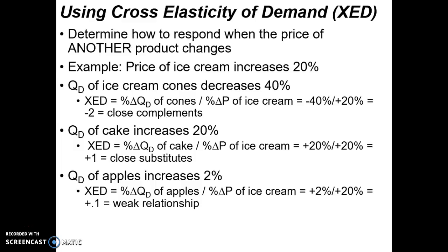Let's use an example of the price of ice cream going up 20%. The first example is ice cream cones. When the price of ice cream goes up 20%, the quantity demanded for ice cream cones decreases 40%. Plugging those values into the formula — percent change in quantity demanded of cones over percent change in price of ice cream — we get negative 40 over positive 20. The value is negative 2. Because it's negative, we see that we have complements. Sure enough, ice cream cones and ice cream are complements.